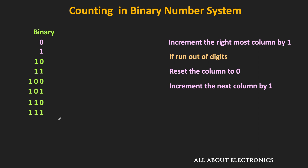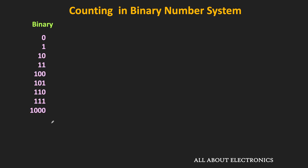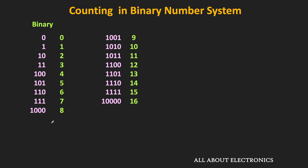Now, if you see, all three columns are run out of digits. So we reset them to 0 and increment the next column by 1, meaning the next number is 1000. This is how counting is done in the binary number system. If we keep on counting, these are the following numbers in binary alongside the corresponding decimal numbers starting from 0. This 1111 in binary corresponds to 15 in the decimal number system.